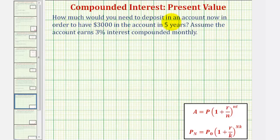How much would you need to deposit in an account now in order to have $3,000 in the account in five years? Assume the account earns 3% interest compounded monthly.